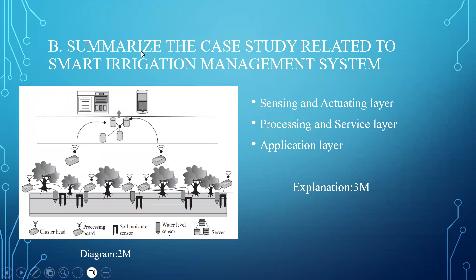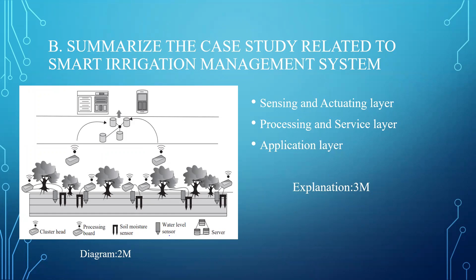Next question: summarize the case study related to smart irrigation management system. When you are going to explain the case study, you will be explaining with a neat diagram. First draw the diagram, where the diagram contains 2 marks, and you will be explaining about the different layers — sensing and actuating layer, processing and service layer, and application layer. All these layers will be explained thoroughly: where the sensors are used, what kind of sensors are used, how the data from the sensors are processed to the application layer. The explanation will contain 3 marks, totally out of 5 marks.